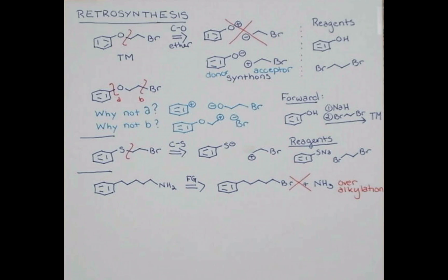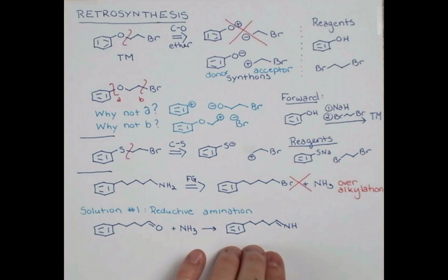But we have a couple solutions for this. The first solution is a reaction called reductive amination. This is where we take the corresponding carbonyl compound, which in this case is this aldehyde, react it with ammonia, and we'll get an imine. This is not typically isolated, but it's reduced with sodium borohydride or hydrogenation. And that will form our target amine.